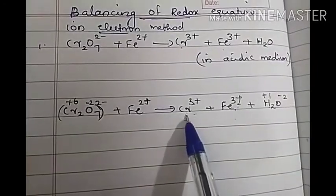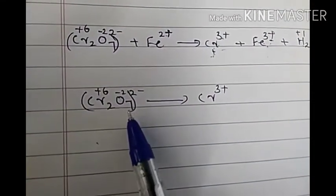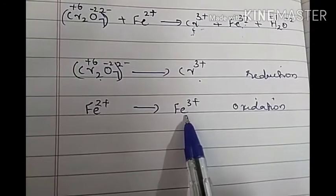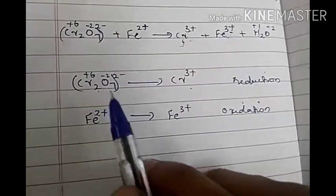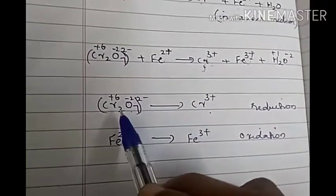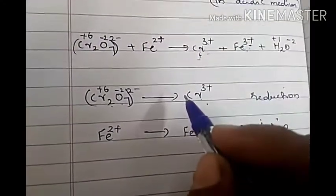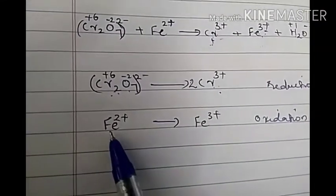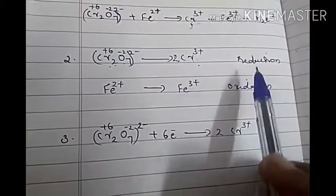The reduction half-reaction is Cr₂O₇²⁻ → 2Cr³⁺, and the oxidation half-reaction is Fe²⁺ → Fe³⁺. Now we balance atoms other than oxygen. In the reduction half, there are 2 chromium atoms on the reactant side but only 1 on the product side, so we multiply the product by 2. For iron, there is 1 Fe on each side so it is already balanced. Reduction means gaining electrons — chromium's oxidation number changes from plus six to plus three, so each chromium gains 3 electrons; with 2 chromiums, a total of 6 electrons are gained. So we add 6 electrons to the reactant side: Cr₂O₇²⁻ + 6e⁻ → 2Cr³⁺. For oxidation (losing electrons), Fe²⁺ loses one electron to become Fe³⁺, written as Fe²⁺ → Fe³⁺ + e⁻.